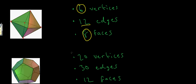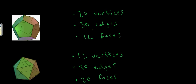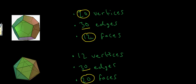Let's see if this is still true for the dodecahedron and the icosahedron. Clearly they've got the same number of edges — each has 30 edges. The number of vertices that the dodecahedron has is 20, and the number of faces that the icosahedron has is 20. And the number of faces on the dodecahedron is 12, and the number of vertices on the icosahedron is 12. So there's our pattern — the vertices of one shape match the number of faces of the other.